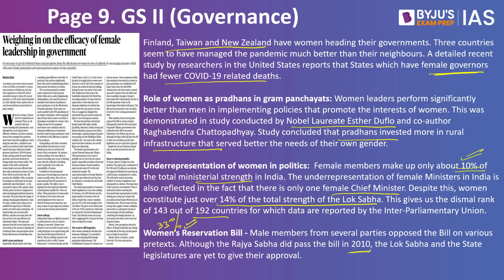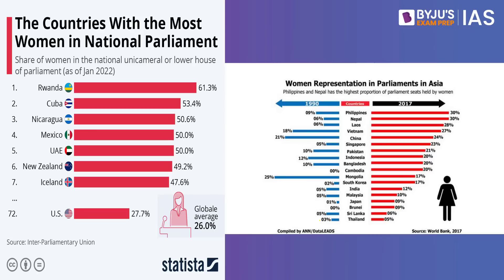Interestingly, the bill has also been opposed by many male members. Even in Asia, India is far below nations like Philippines, Nepal, Vietnam, Singapore, even Pakistan and Bangladesh in women's parliamentary representation. Worldwide, Rwanda (which has women's reservation) tops the list, followed by Cuba, Mexico, Nicaragua, UAE, New Zealand, Iceland. The global average of 26% is almost twice what India has in our parliament. Studies have proven a direct correlation between number of women in government and good governance, so we need to improve this.